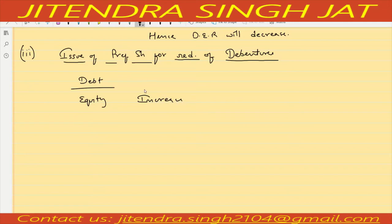We have issued preference shares for the purpose of redemption of debentures, for the payment of debentures. But redemption is not done yet. So it means there is no change in debt. The ratio is already 2 is to 1. When equity increases and there is no change in debt, the ratio will decrease.